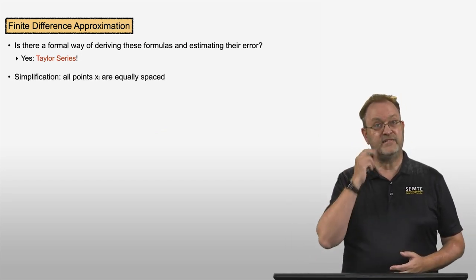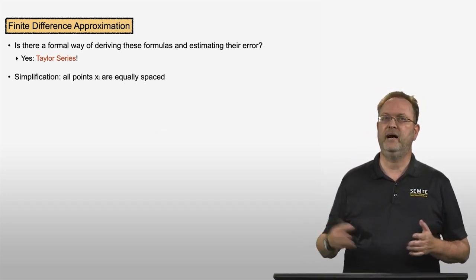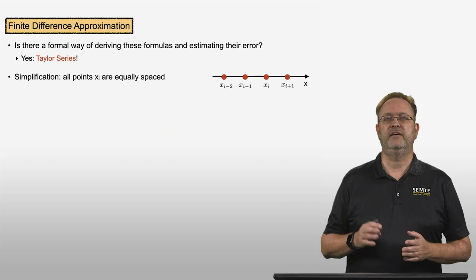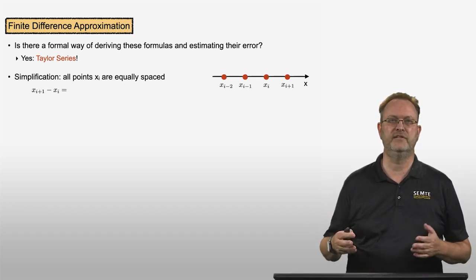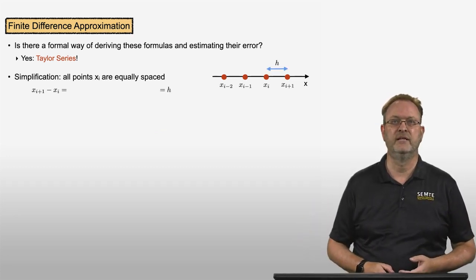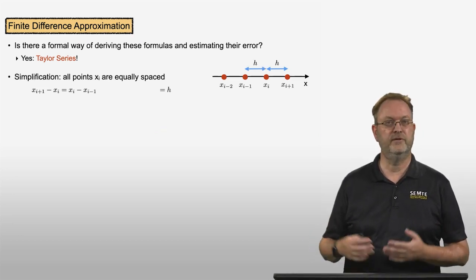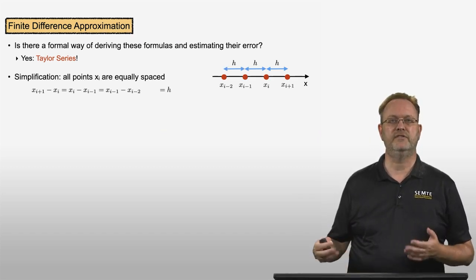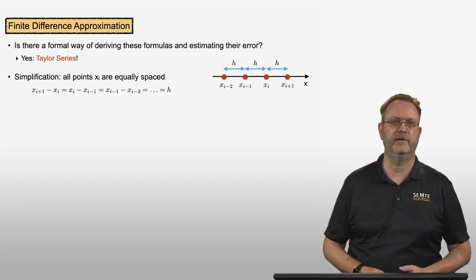For the Taylor series, I'm going to introduce a simplification that all points xi are equally spaced. That means if I have the x-axis here, there is an equal distance between adjacent points. The distance between xi plus 1 and xi is equal to h, and similarly the distance between xi and xi minus 1 is equal to h. The distance between all adjacent points is equal to h, the distance between neighboring points.